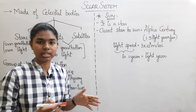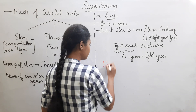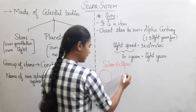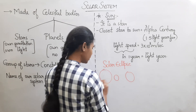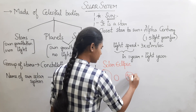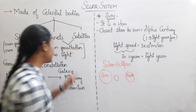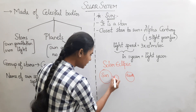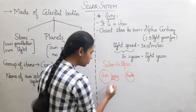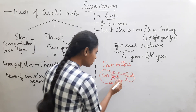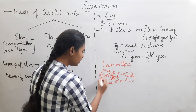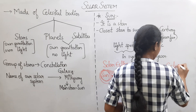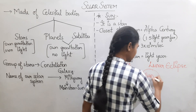Next, let's talk about solar eclipse and lunar eclipse. First, let's talk about solar eclipse. In a solar eclipse, the Moon comes between the Sun and the Earth. The Moon blocks the Sun's light, so the Sun appears dark from Earth.